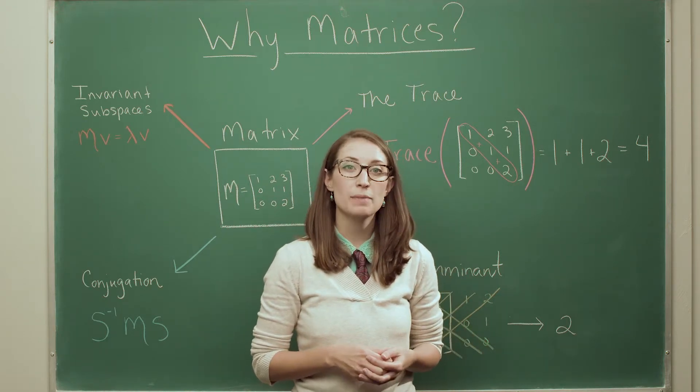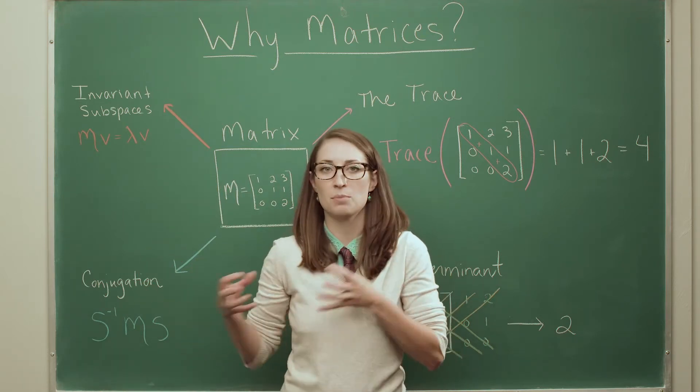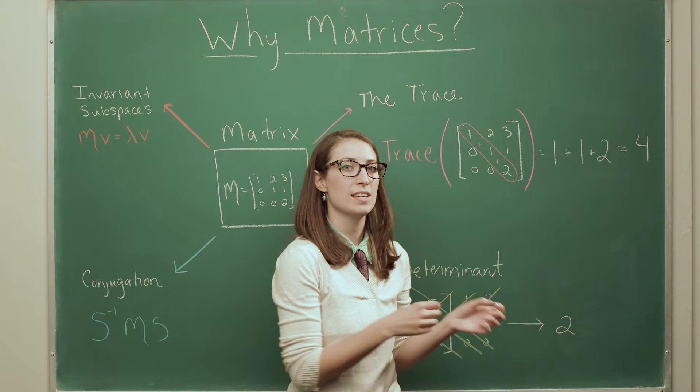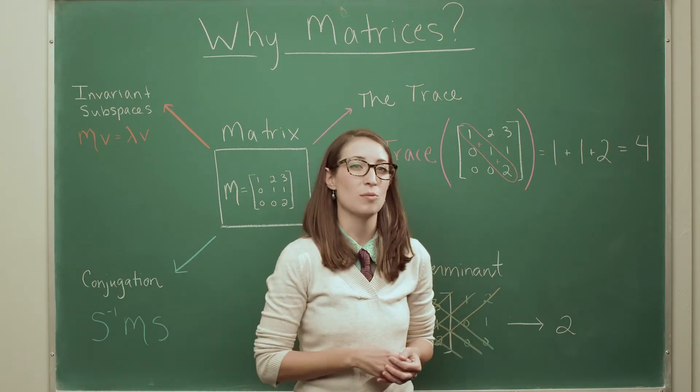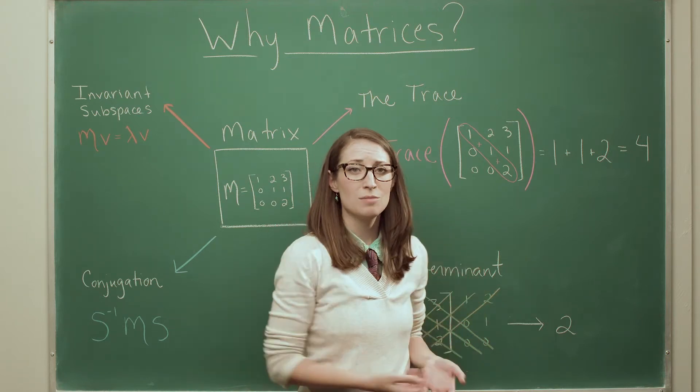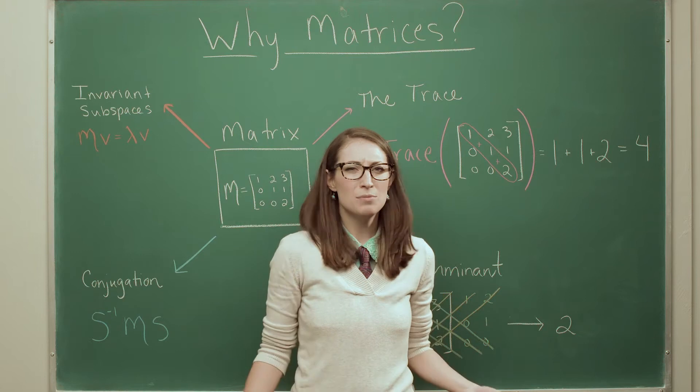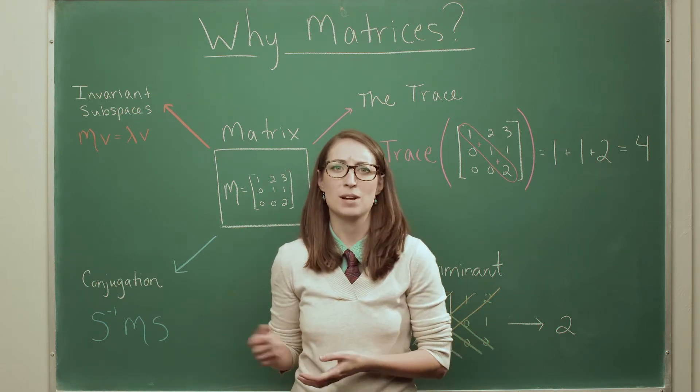From there, we learned about a representation, and that's a special kind of function that inputs braids and outputs matrices, and it does it in a very special way that preserves all of the structure that we wanted to learn about the braids, but now the structure is in matrices. So the big question is, why did we do this? What do we gain by looking at the matrices instead of the braids?